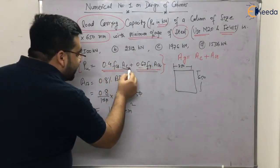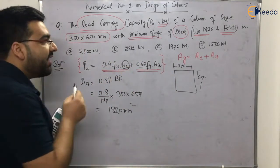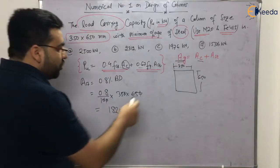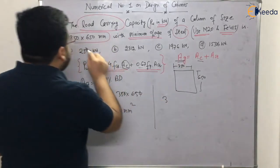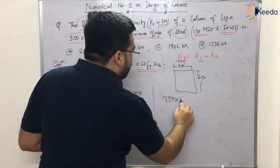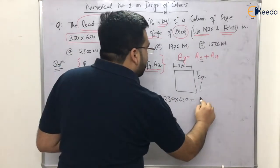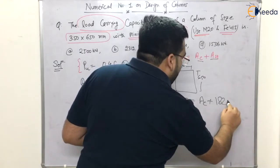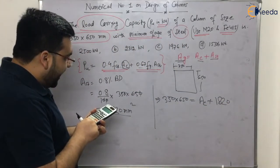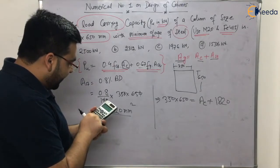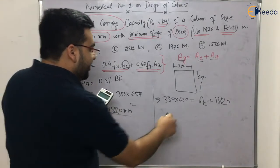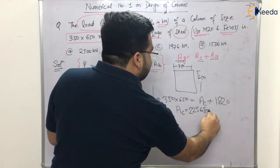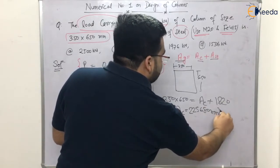Now this is known, but this is not known. So what I have to do is calculate AC from this formula. The gross cross sectional area will be equal to 350 into 650, which equals area of concrete plus area of steel. Area of steel is 1820, all in mm square. So if you subtract, area of concrete will be equal to 225,680 mm square.